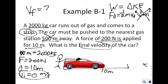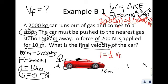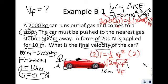Plugging in: 200 × 10 = ½ × 2,000 × Vf². This gives 2,000 = 1,000 × Vf². Since 2,000 appears on both sides, it cancels, leaving 1 = ½Vf². Multiplying both sides by 2 gives Vf² = 2. Taking the square root, the final velocity is √2 ≈ 1.414 meters per second.